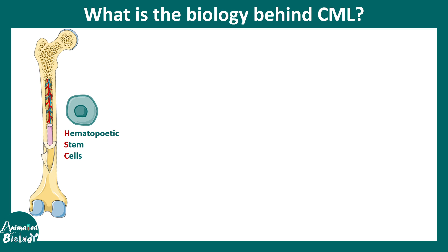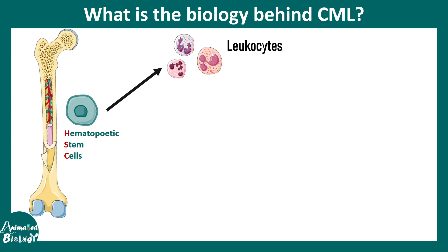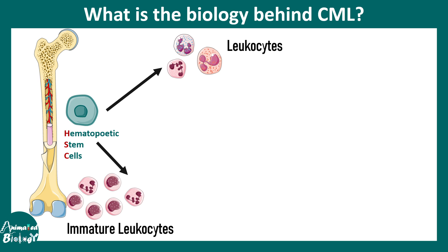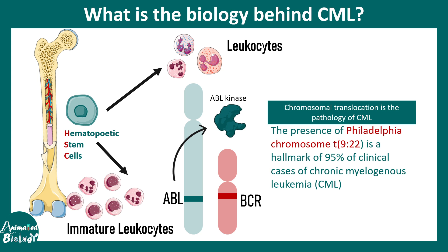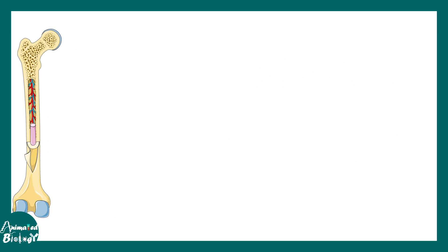Blood cells are born from hematopoietic stem cells, which eventually form leukocytes — the white blood cells. In this particular situation, when the translocation happens, it leads to production of immature leukocytes, compared to the normal situation where mature leukocytes are produced. These leukocytes are stuck in an immature state, with the key culprit being the ABL kinase. This leukocyte maturation defect is the take-home message.